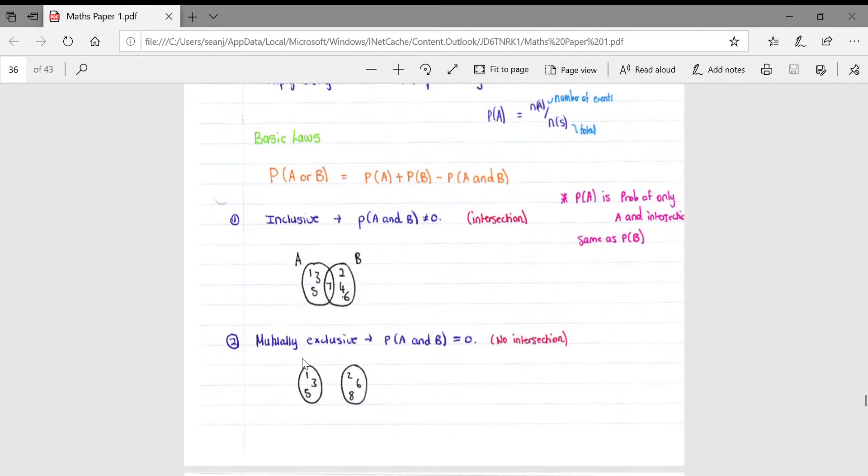Then a mutually exclusive event is when the probability of A and B is equal to zero, meaning there's no intersection. So it's basically the opposite of an inclusive event. That means that your two event circles in your Venn diagram are not overlapping and there's no intersection.